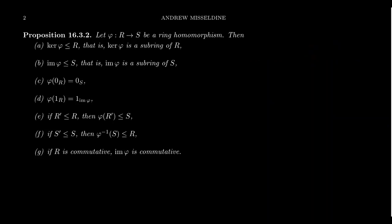You can also argue that the image of a ring homomorphism is a subring of the codomain — that is, the image of phi is a subring of S. The zero element of R will always map to the zero element of S. This always happens with a ring homomorphism because if we forget the multiplication, a ring homomorphism is just an additive group homomorphism, and the identity must map to the identity — so zero maps to zero.